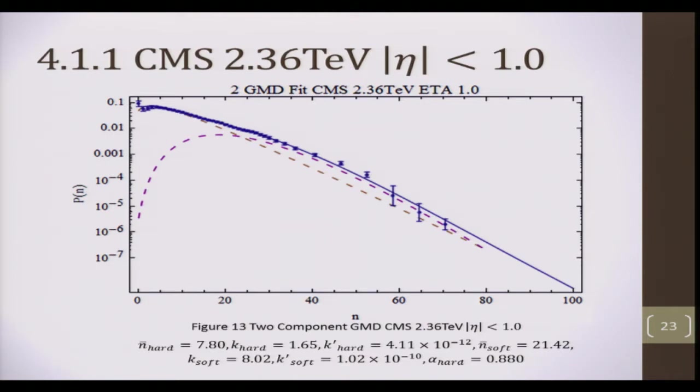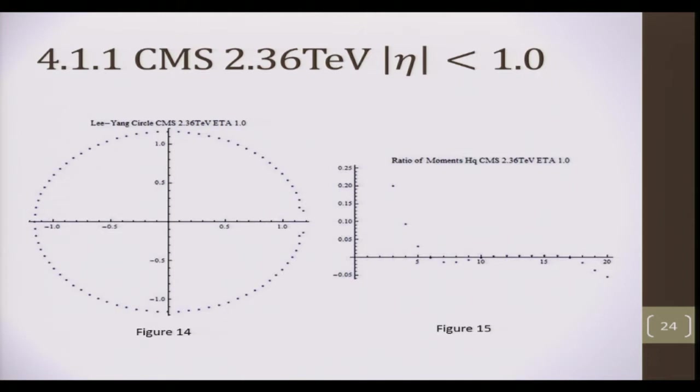Here I present the multiplicity data for the 2.36 TeV at pseudo-rapidity, absolute pseudo-rapidity cut of 1.0. These are the parameters that describe the data well. On the left, in figure 14, I present the Lee-Yang plot. On the right, I present the HQ moment plot. The HQ moment is defined as the ratio of the cumulant moment to the factorial moment. The study of this was suggested by Dremin, and later Dremin and Hwa. But I would like to draw your attention to the figure on the left, the Lee-Yang plot. Once again, closed on the left, and on the right, you see a sort of ear structure at eta 1.0.